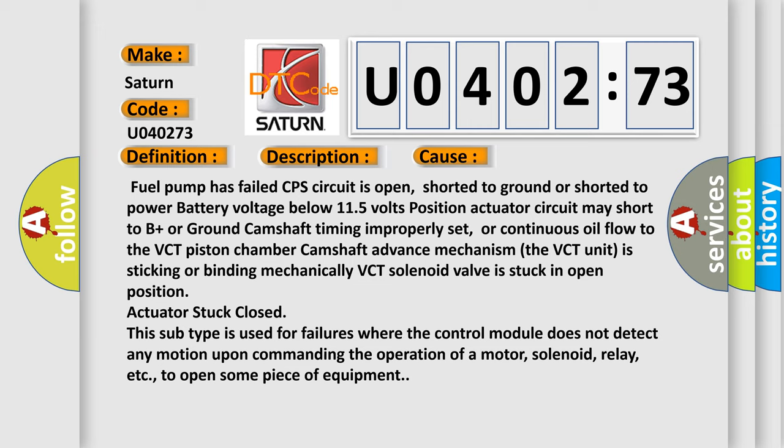Camshaft advance mechanism, the VCT unit is sticking or binding mechanically, VCT solenoid valve is stuck in open position, actuator stuck closed. This subtype is used for failures where the control module does not detect any motion upon commanding the operation of a motor, solenoid, relay, etc., to open some piece of equipment.